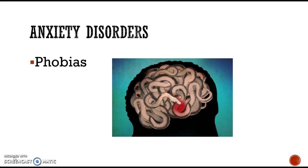Phobias include specific phobias and social phobias. Social phobias involve fear of embarrassment in front of others, including selective mutism and public speaking phobias. Specific phobias include arachnophobia (fear of spiders) and claustrophobia (fear of enclosed spaces). One important one to remember is agoraphobia — fear of being outside the home, in large spaces or crowds. Agoraphobia is considered a disorder because it is personally dysfunctional; someone cannot live a normal life with it.